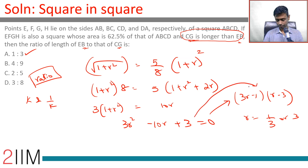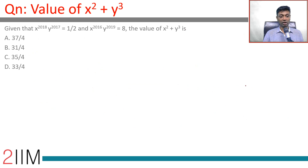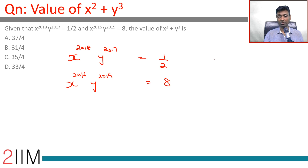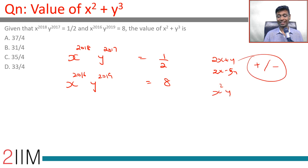Another fabulous but very tough question — one I tried during the exam and did not get right. Given: x^2018 · y^2017 = 1/2 and x^2016 · y^2019 = 8. Whenever dealing with expressions like x² · y³ or x/y, multiplying or dividing equations works better than adding or subtracting.